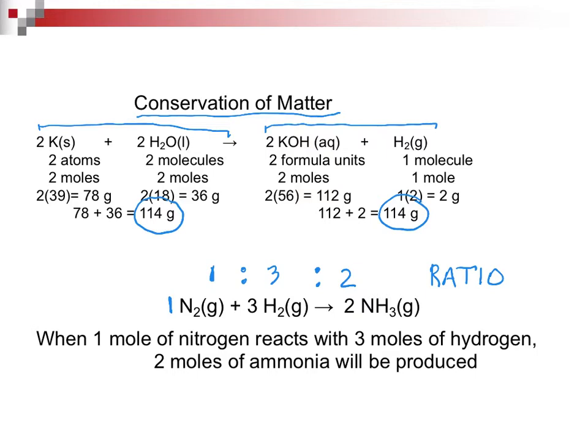What if instead I use two moles of nitrogen? What would happen? Well, I would need to have six moles of hydrogen for this reaction to occur, and I would be producing four moles of ammonia. That's what I mean by ratio. You'll use it also in 1220.